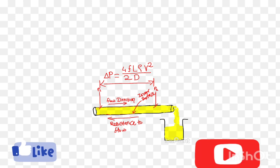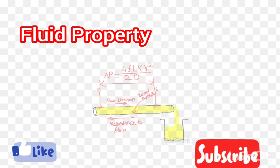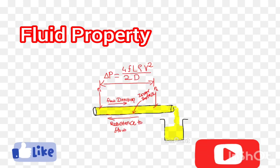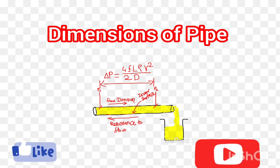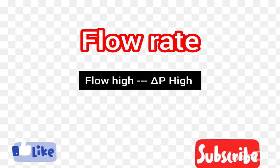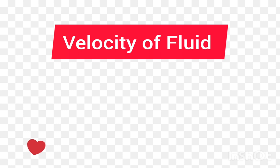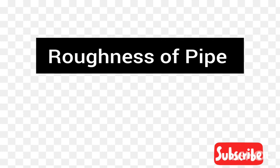To accurately calculate pressure drop due to friction, we need to consider several key factors. First is fluid properties — the dynamic viscosity and density of the fluid affect the level of friction within the pipe. Second is pipe dimensions — the length and diameter determine how much resistance the fluid encounters. Third is flow rate — the velocity of the fluid is a crucial factor; faster flow results in greater friction and more significant pressure drop. Fourth is pipe roughness — the roughness of the pipe's inner surface can significantly impact friction and pressure drop.